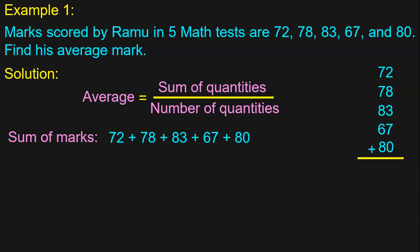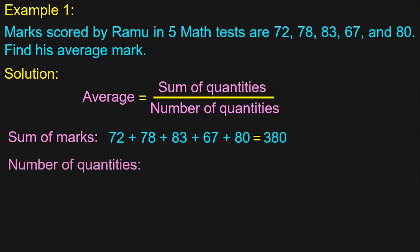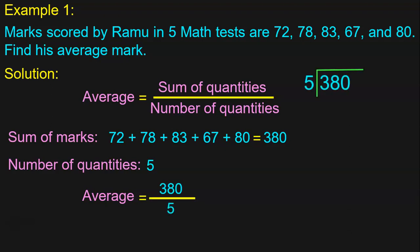2 plus 8 is 10. 10 plus 3 is 13. 13 plus 7 is 20. 0, carry over 2. 2 plus 7 is 9. 9 plus 7 is 16. 16 plus 8 is 24. 24 plus 6 is 30. And 30 plus 8 is 38. So the answer is 380, which is the sum of the 5 math test marks. The number of quantities is the number of tests, which is 5. Now let us divide 380 by 5.